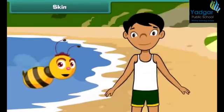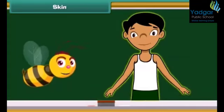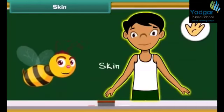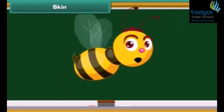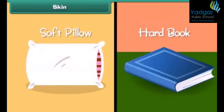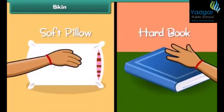The fifth sense organ of our body is skin. Skin is the organ for touch and forms the outer covering of our body. Skin helps us identify things by touch, such as the difference between a soft pillow and a hard book.